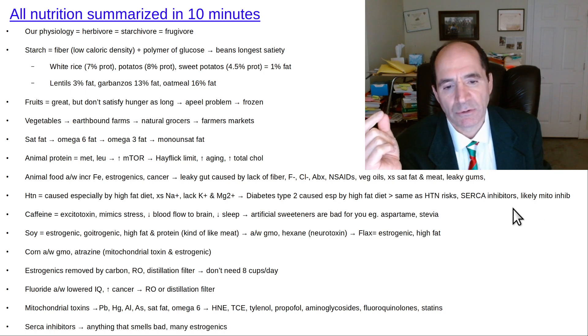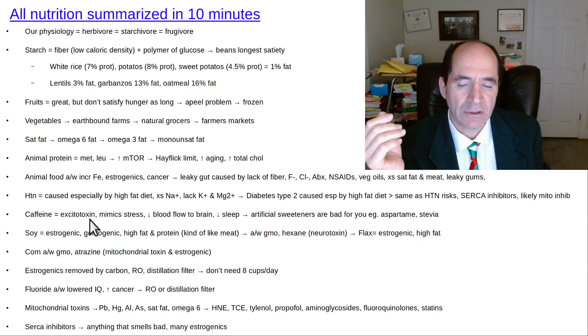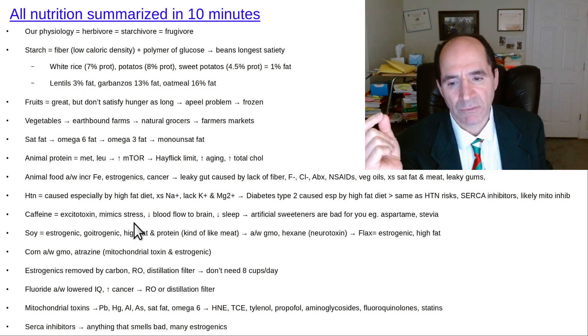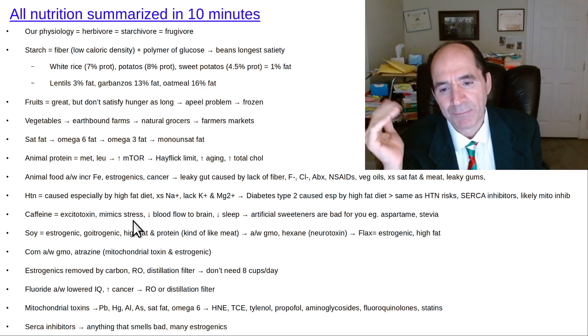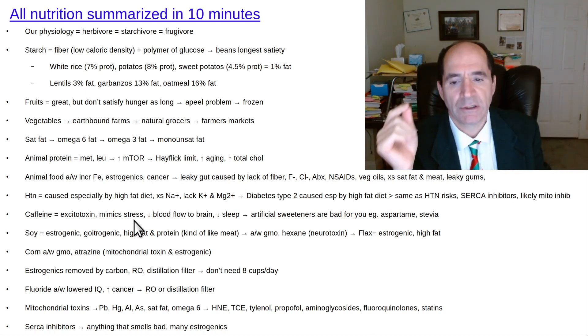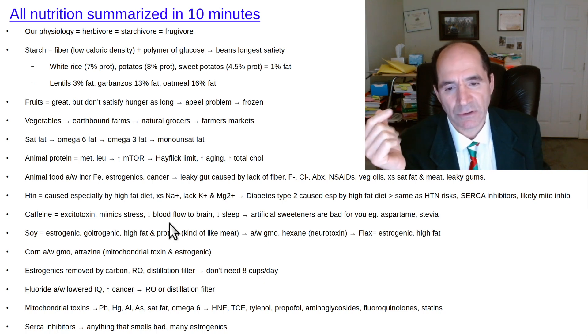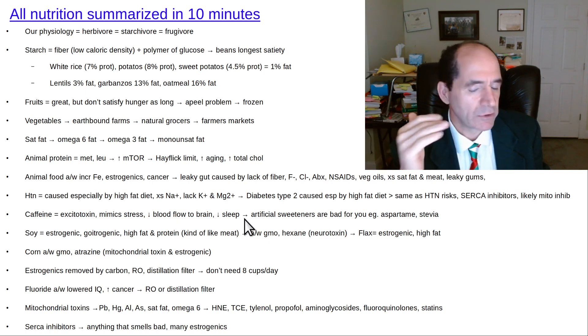SERCA inhibitors, mitochondrial inhibitors also increase your risk of diabetes. Caffeine is an excitotoxin. It basically mimics the hormones of acute stress response, meaning increased catecholamines—adrenaline, noradrenaline, and cortisol. Those increase glutamate transmission in your brain cells. You don't want that. Simultaneously, it's a vasoconstrictor dropping blood flow to your brain, in the ballpark of 15%. You don't want that. Decreasing your sleep—that's all bad.